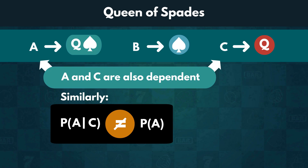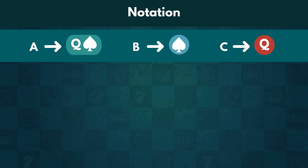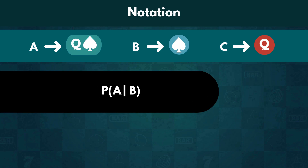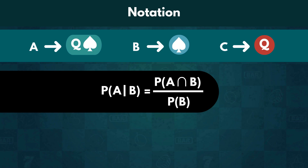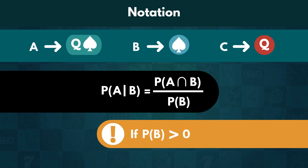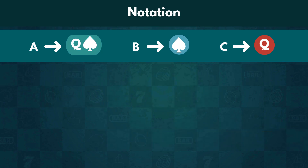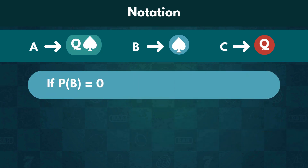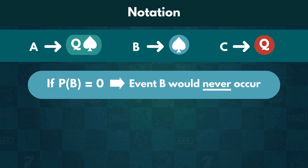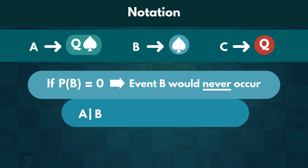Let's formalize these observations with a formula. By definition, the conditional probability of an event A given an event B equals the probability of the intersection of A and B over the probability of event B occurring. This holds true only if the probability of event B is greater than 0. And logically so — if P of B is equal to 0, then event B would never occur, and thus A given B would not be interpretable.